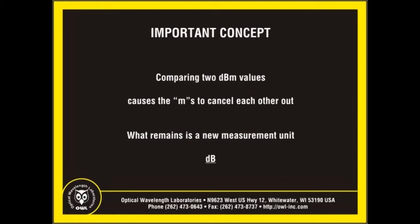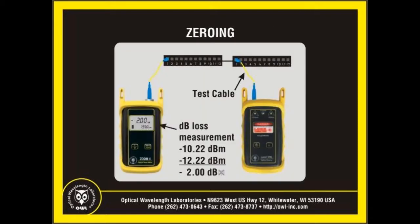Once the reference has been set, the power meter and light source can be connected to opposite ends of the link under test. When this is done, the power meter measures the received optical power, compares it to the reference level, and automatically performs the necessary calculations. The resulting test result is the optical loss of the link in dB.